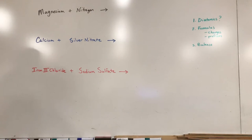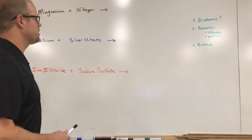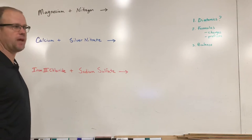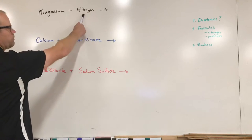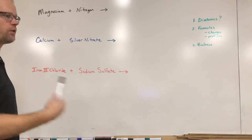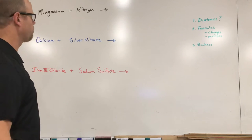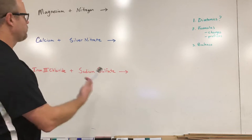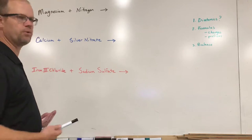Alright, what we're going to do in this video is write some balanced equations for chemical reactions, but we're going to start differently than we have in the past. If you'll notice these examples, I've given you a couple of reactants, but I don't tell you what the products are going to look like. This is sort of the next phase in the progression to be able to predict what happens.